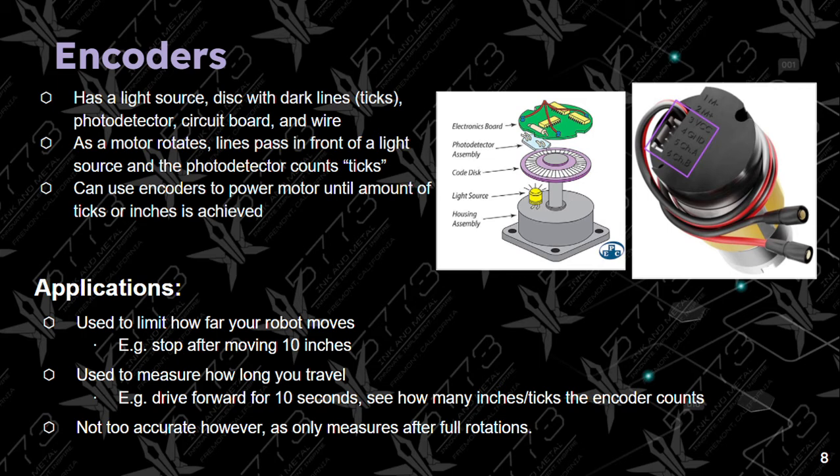Encoders are used to limit how far your robot moves. For example, you can use encoders to stop after moving 10 inches or 10 centimeters. They can also measure how long you travel — for example, drive forward for 10 seconds and see how many inches or ticks the encoder counts. One drawback is that it can be slightly inaccurate, as it only measures after full rotations. So if your wheel moves 10 full rotations and then half a rotation, the encoder will only count the full 10 rotations.